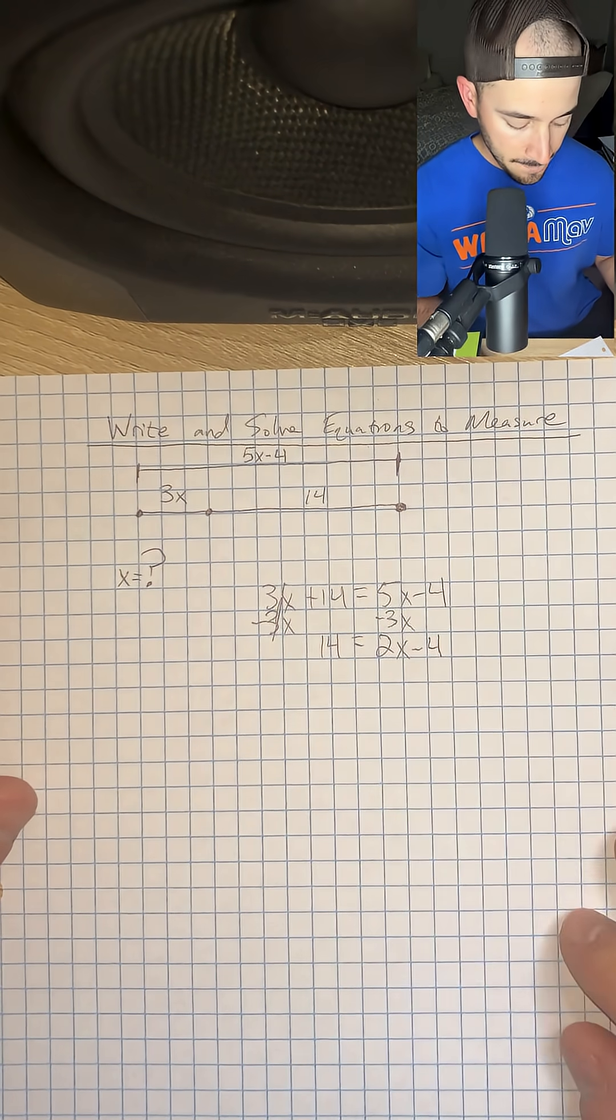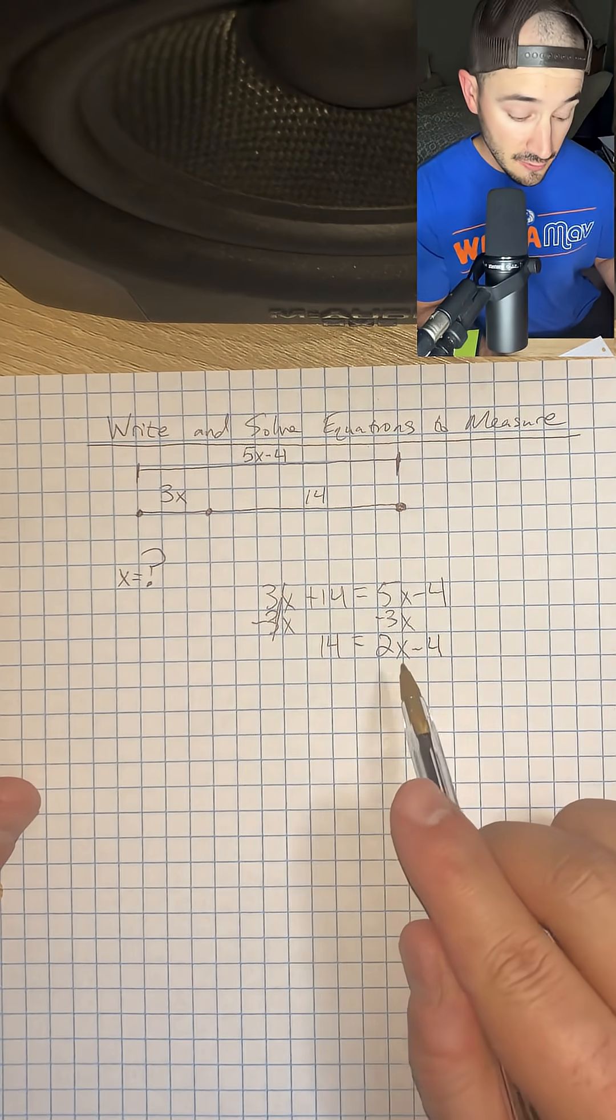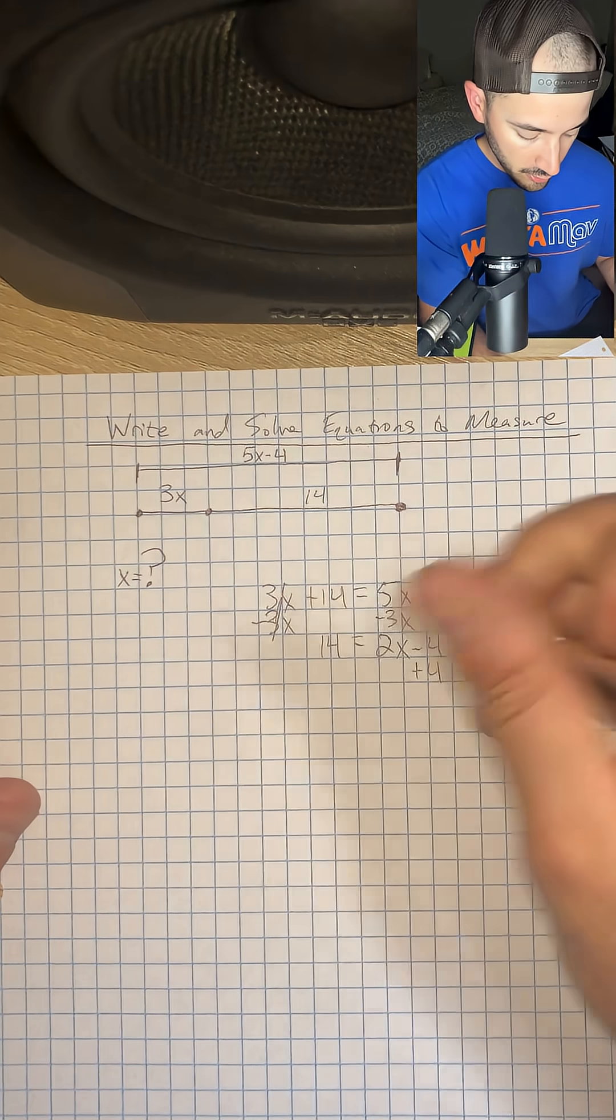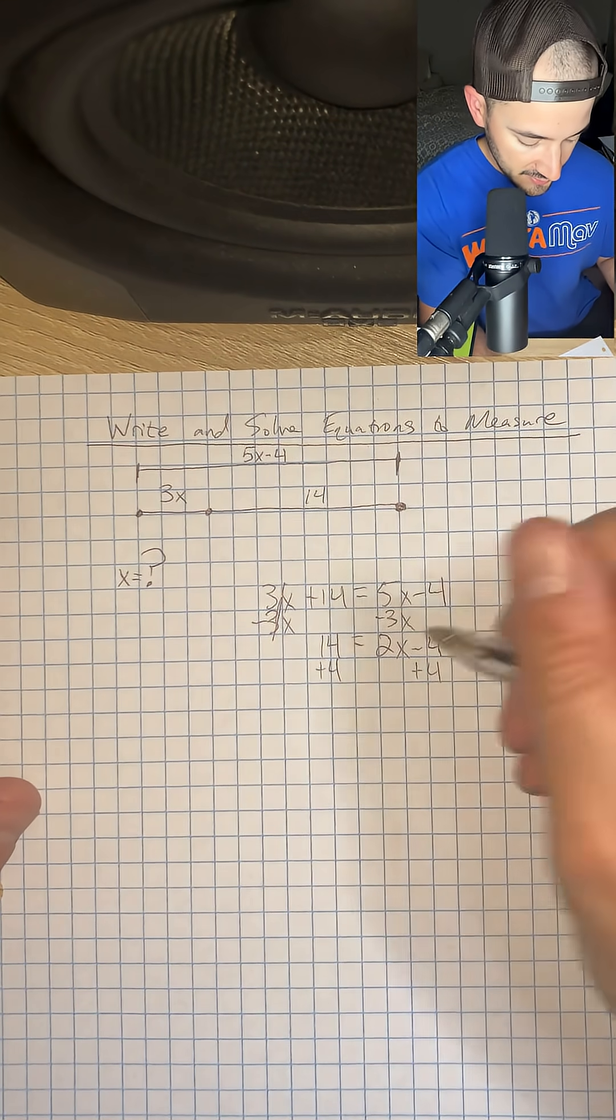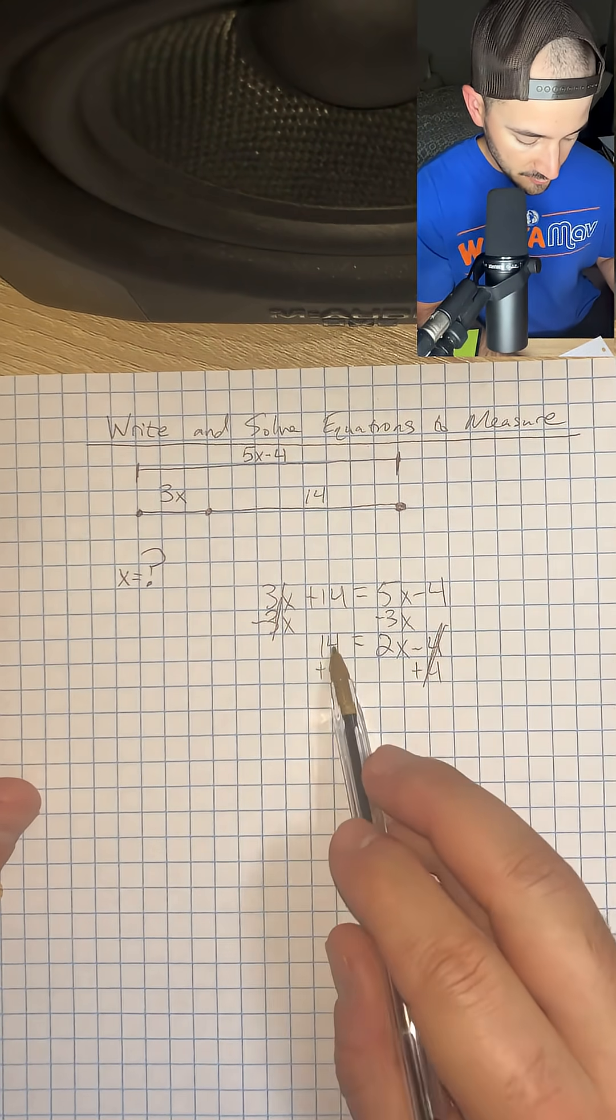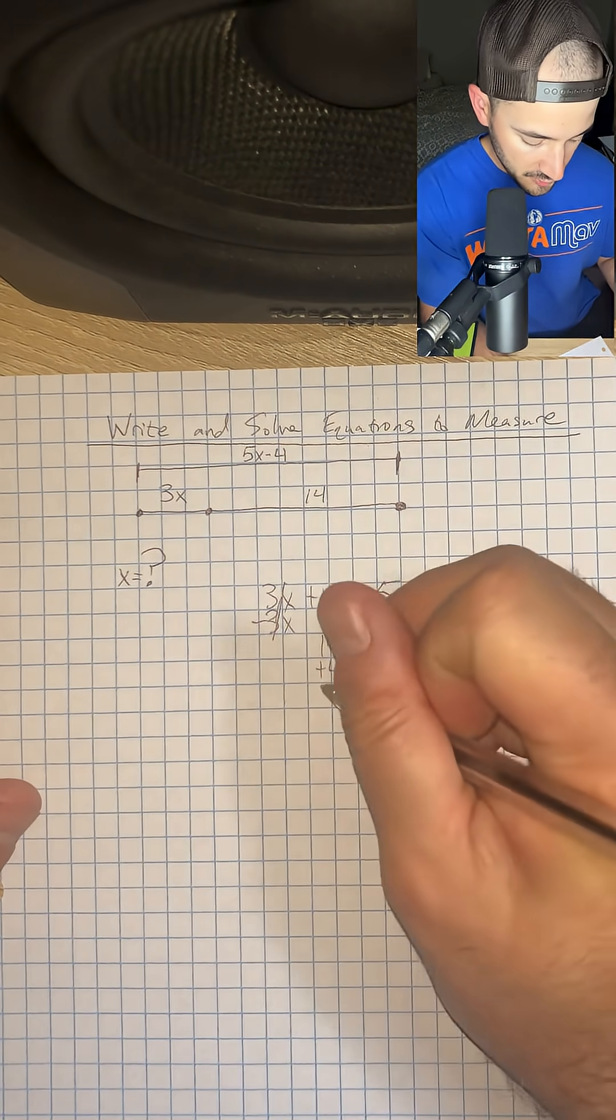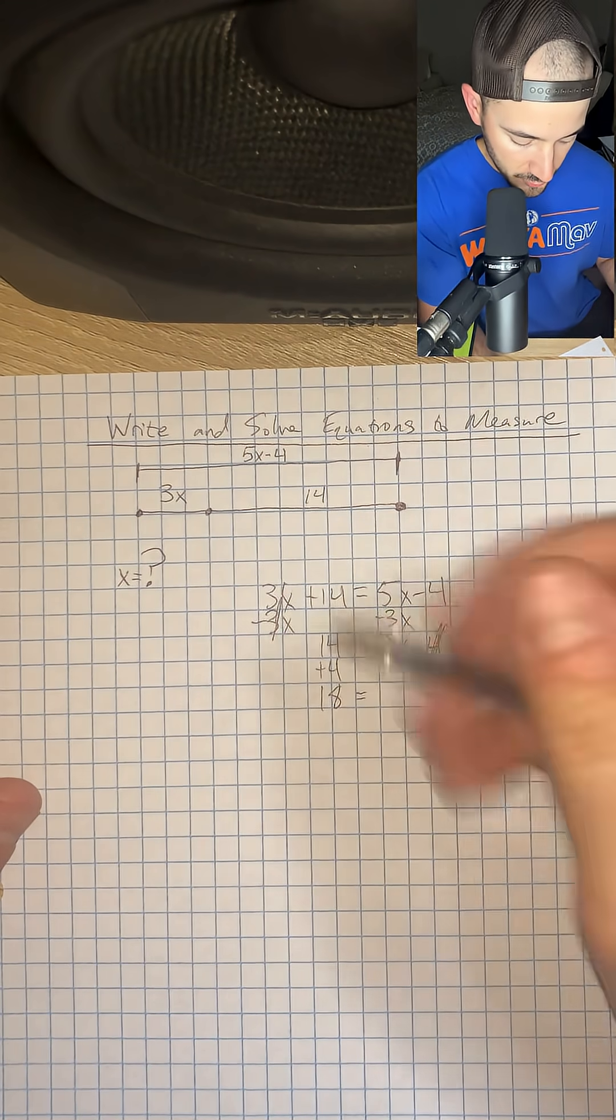So we're going to bring that down. We want to get 2x by itself, so we're going to add 4 to both sides to cancel that out and leave us with 14 plus 4, which is 18, is equal to 2x.